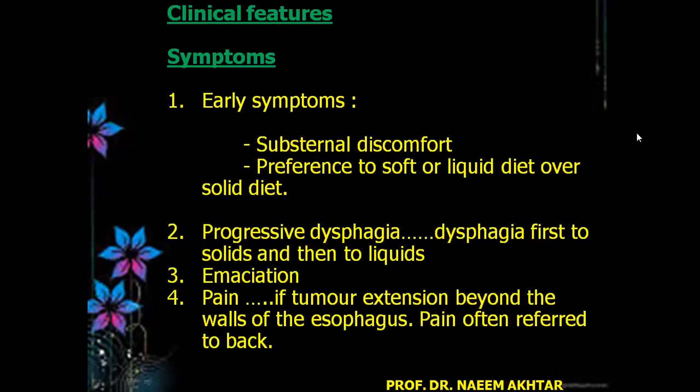Clinical features — symptoms: the earlier symptoms are substernal discomfort, preference for soft or liquid diet over solid diet. The patient may have progressive dysphagia — first to solids and then to liquids. The patient will develop emaciation. Pain may occur if tumor extension is beyond the walls of the esophagus, often referred to the back.